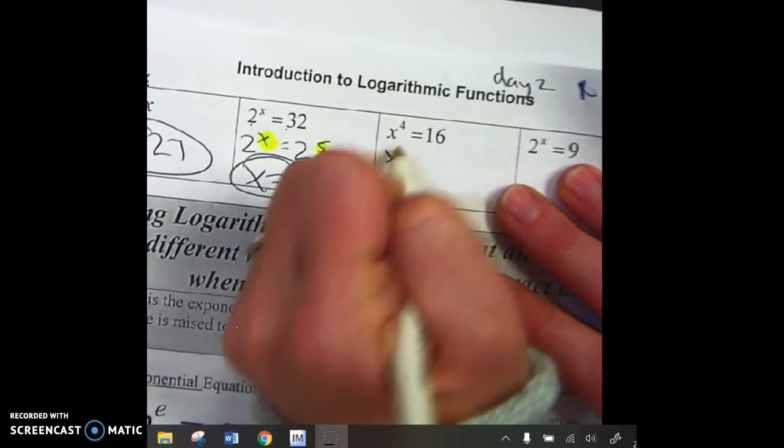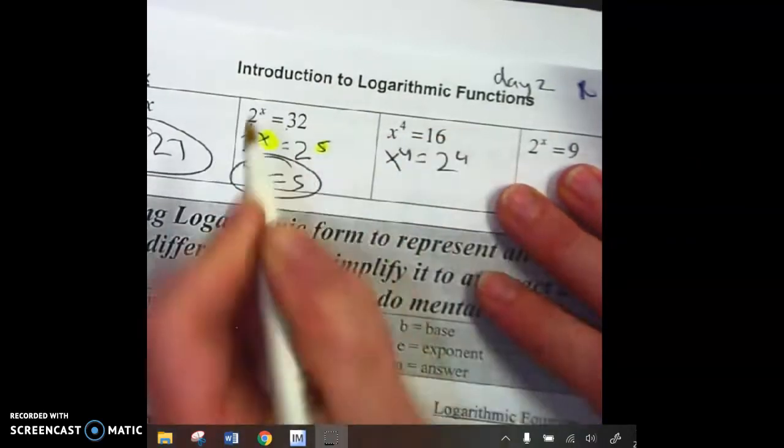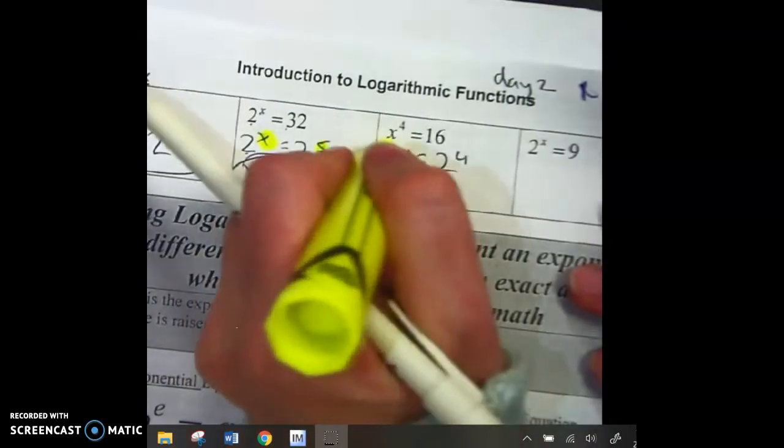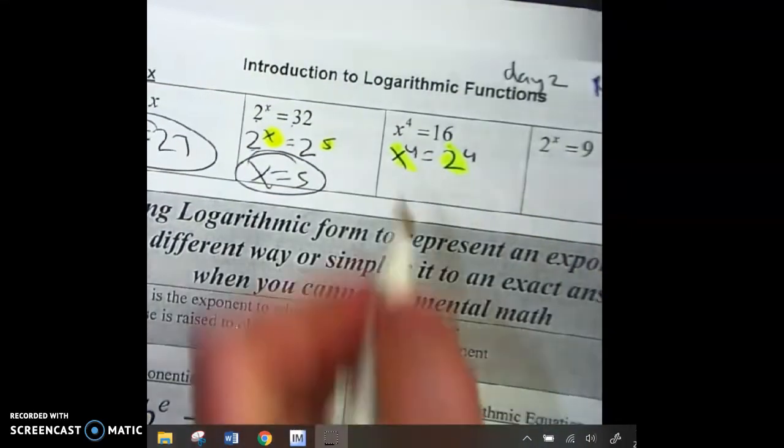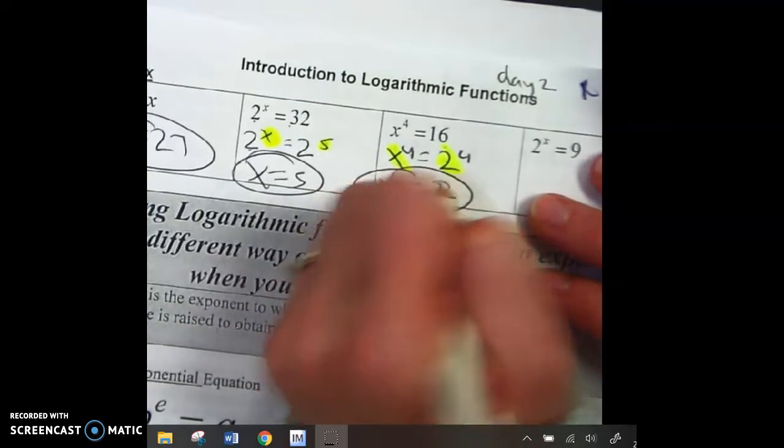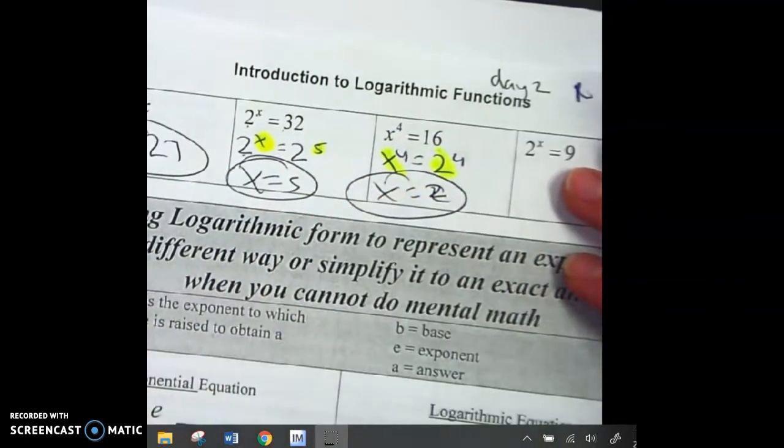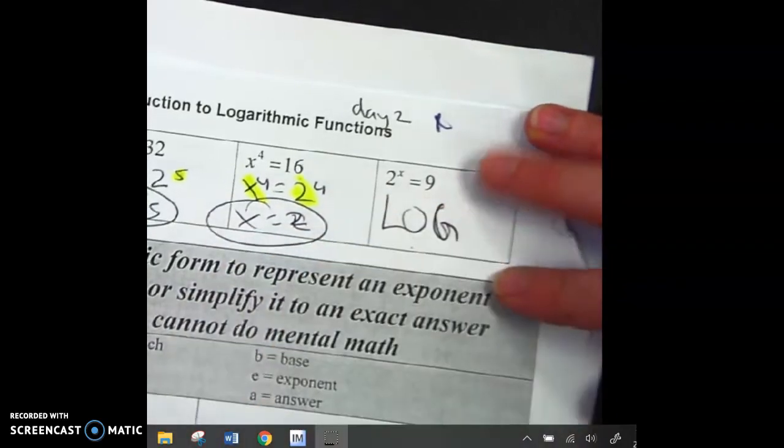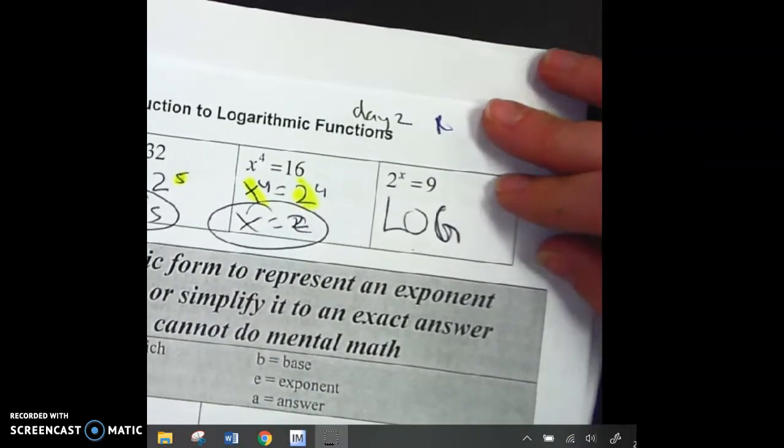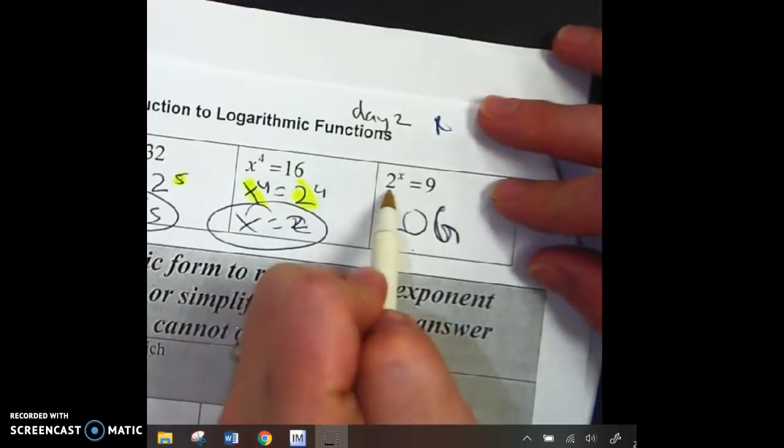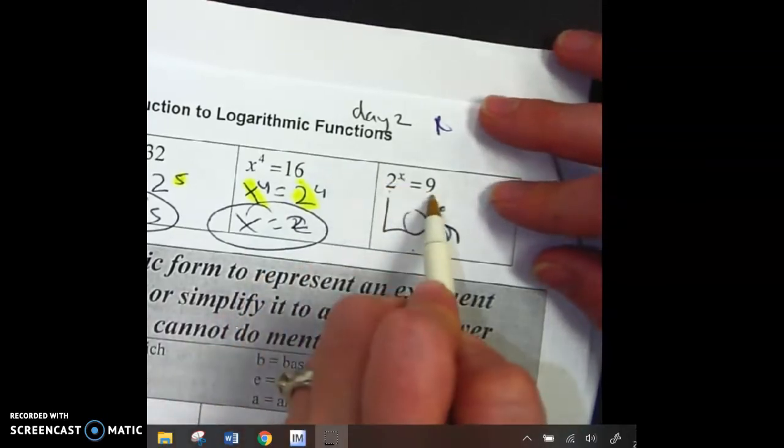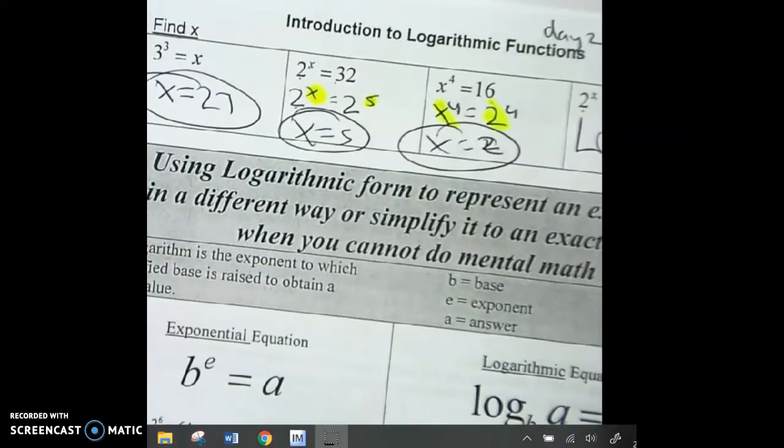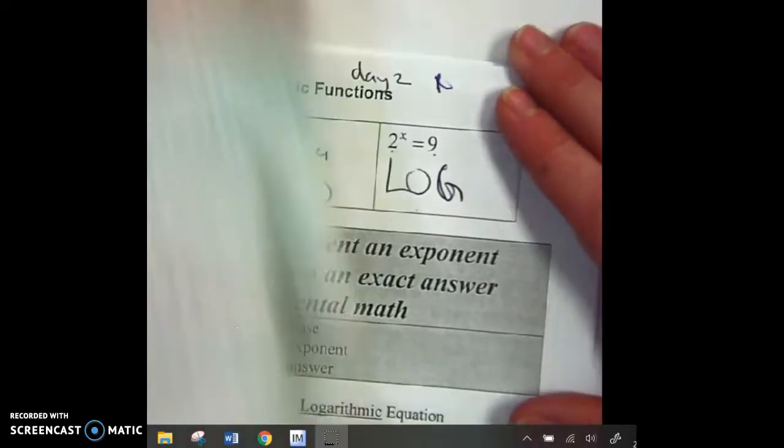x to the 4th is equal to 2 to the 4th, so this time, instead of having the bases the same, I have the exponents the same, so x equals 2. All things we've learned before, last chapter, in fact. But then if you look over here, here's how this chapter is, why this chapter is happening. You can't figure out 2 to the what is going to give you 9, but you're going to learn about logarithmic form that you'll eventually be able to figure out the perfect answer.